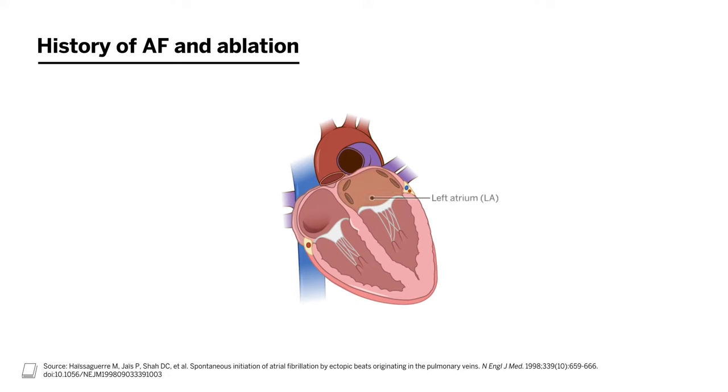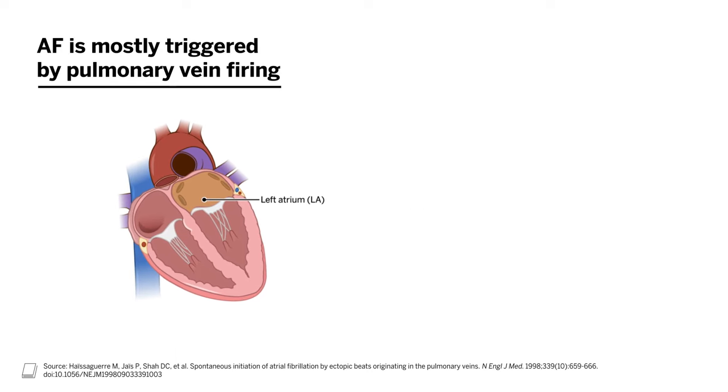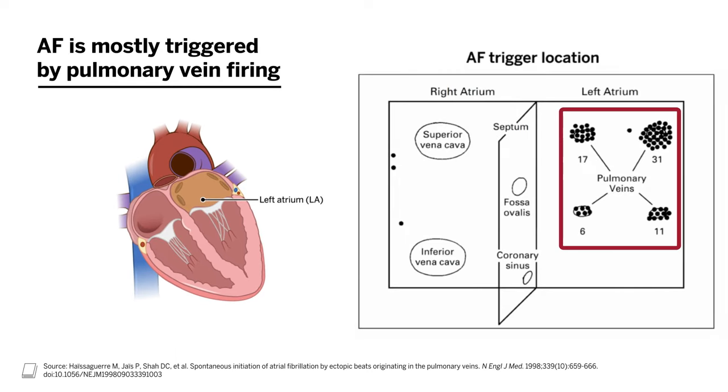Initially, the idea of ablating AFib was thought to be impossible — if the whole atria is fibrillating, what would you ablate? But in 1998, there was a seminal paper published by Haissaguerre et al. in the New England Journal, where they mapped where ectopy was coming from in patients' atria that triggered AFib. They found that the vast majority of atrial ectopic beats that triggered AFib were actually located within the pulmonary veins, leading to the idea of ablating the trigger of AFib to prevent it long-term.